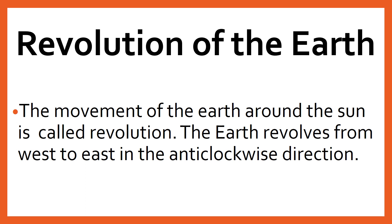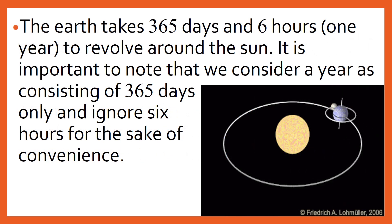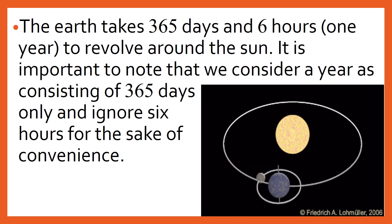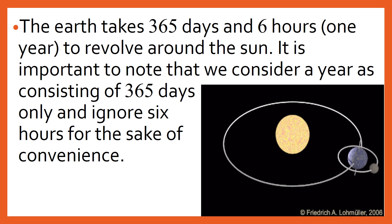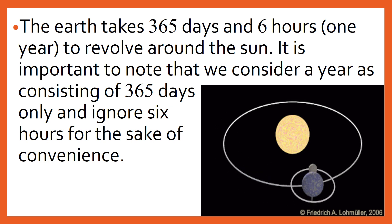Students, the second motion of the earth is revolution. The movement of the earth around the sun is called revolution. The earth revolves from west to east in the anti-clockwise direction. The earth takes 365 days and 6 hours to revolve around the sun. That is why a year has 365 days. It is important to note that we consider a year as consisting of 365 days only and ignore the 6 hours for convenience, because it is difficult to calculate one-fourth of a day.